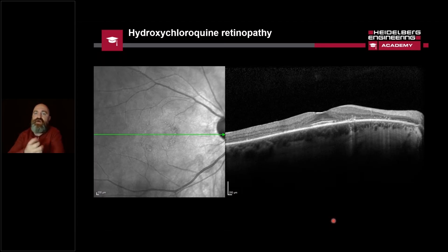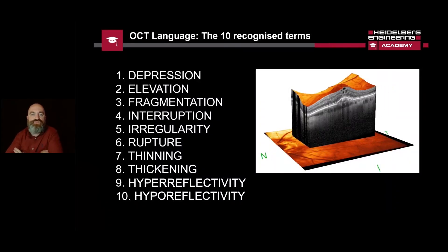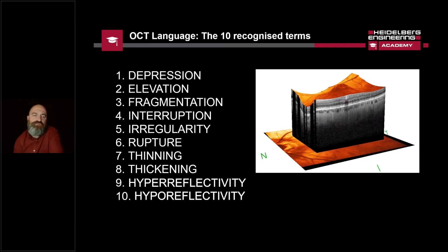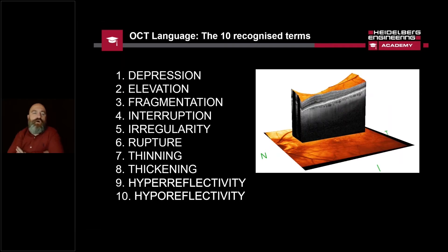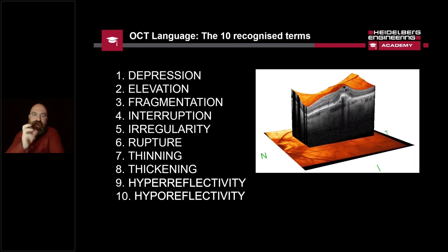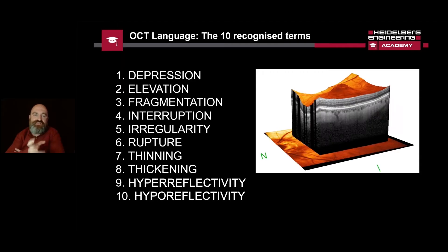You wouldn't necessarily know all these straight away unless you'd looked at lots and lots of OCTs. You might not be able to name and identify the actual condition — that still happens in secondary eye care. We still have complicated cases where even ophthalmologists might not know the diagnosis straight away. So what does everyone do in those circumstances? They use descriptive words to describe what the OCT is showing them, and these are 10 of those recognised terms.